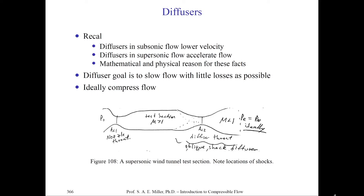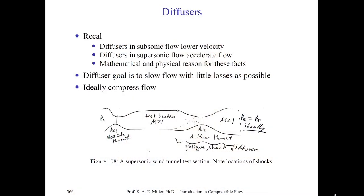Now let's turn our attention to diffusers. In subsonic flow, diffusers lower velocity and raise pressures and temperatures, recovering energy enthalpy. The same device in supersonic flow actually accelerates the flow — they are expanding it, converting enthalpy into kinetic energy in thermodynamic terms. The diffuser's goal is still always to slow down the flow with as little losses as possible. In the diffuser of a supersonic wind tunnel, we must re-choke the flow and then re-compress it, just like a diffuser in traditional subsonic flow.